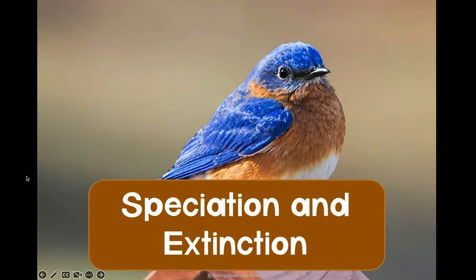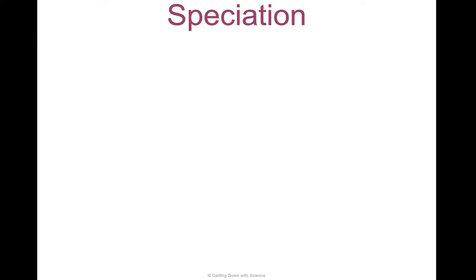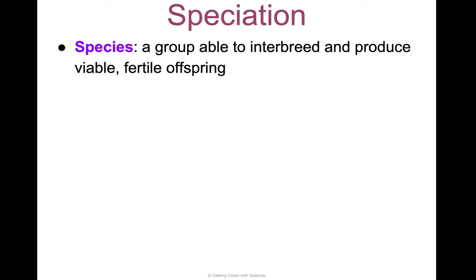Let's start Unit 7, Topics 10 and 11. This is speciation and extinction. Speciation is how new species are made. Extinction is how species go away. So let's talk.